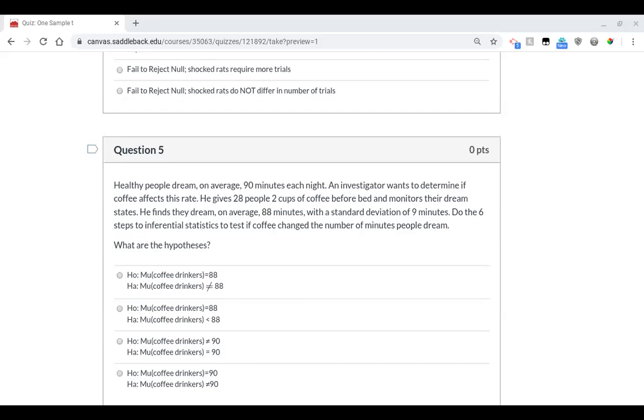Healthy people dream on average 90 minutes each night. An investigator wants to determine if coffee affects this rate. He gives 28 people two cups of coffee before bed and monitors their dream states. He finds they dream on average 88 minutes with a standard deviation of 9. So let's go ahead and see if we can establish what our parameters are.